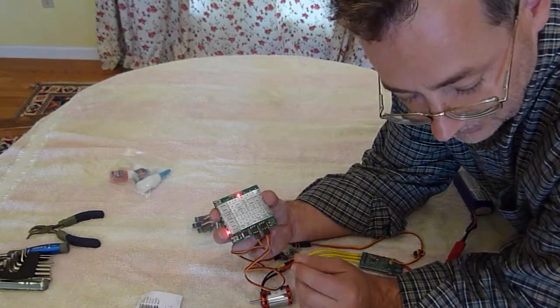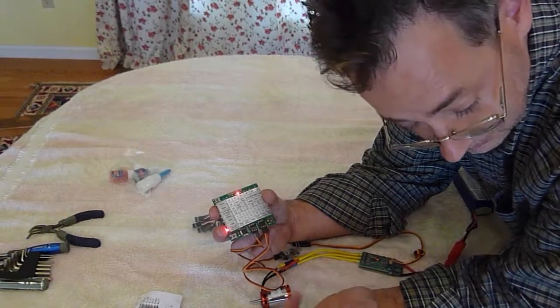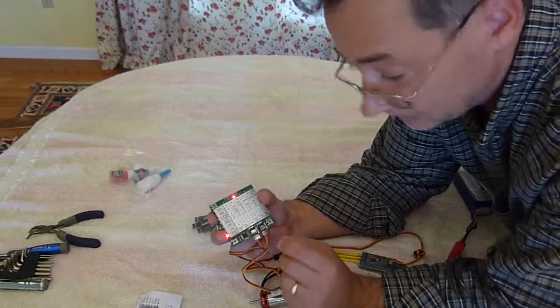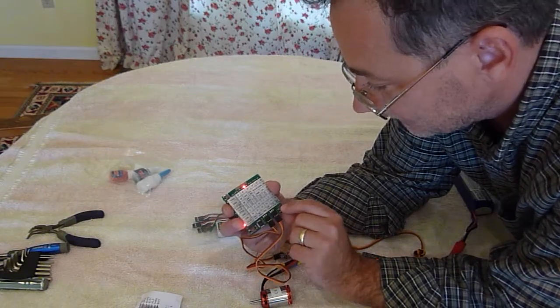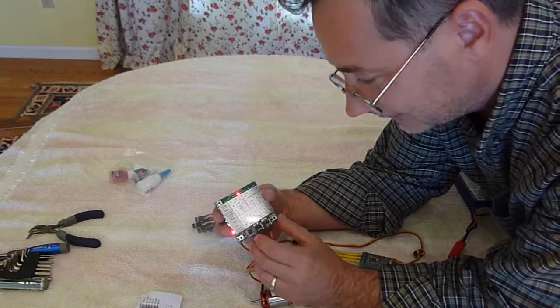So have your throttle curve so that down throttle is zero and be in normal mode. Don't be on throttle hold. Now I've got it. Stick down. I'm ready to save it. So I'm going to save it. Motor beep indicating that it's saved.